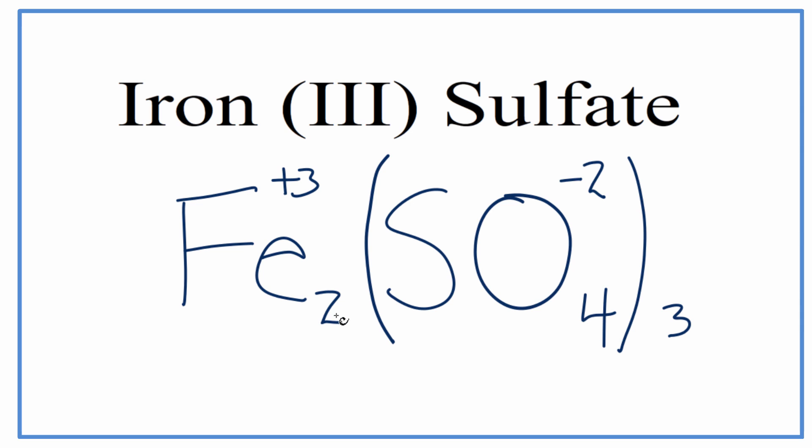So when we multiply our charges, 2 times plus 3, that gives us a plus 6. 3 times minus 2 is minus 6, and you can see that the plus 6 and the minus 6, they're going to cancel out, and our net charge is going to be zero.